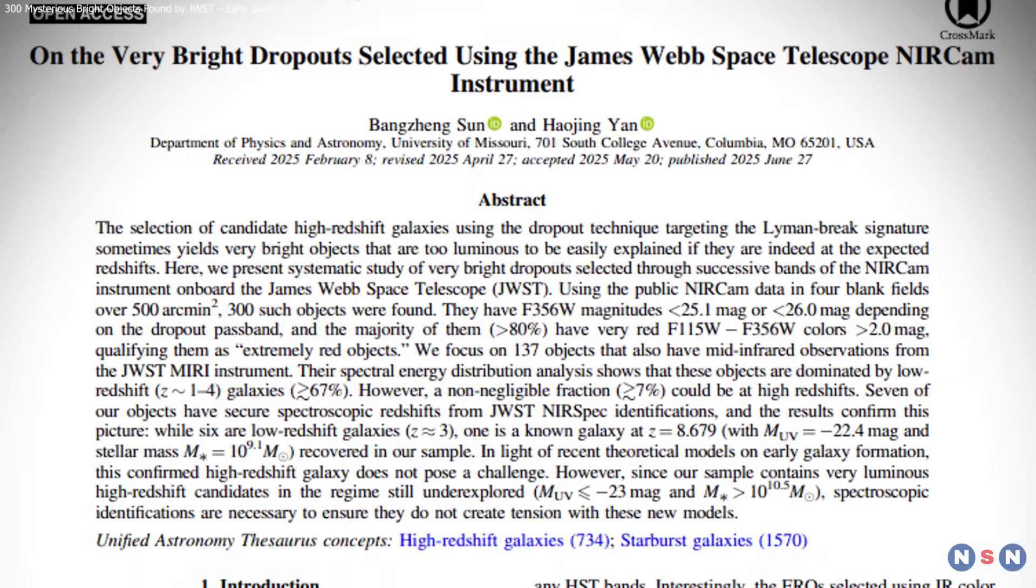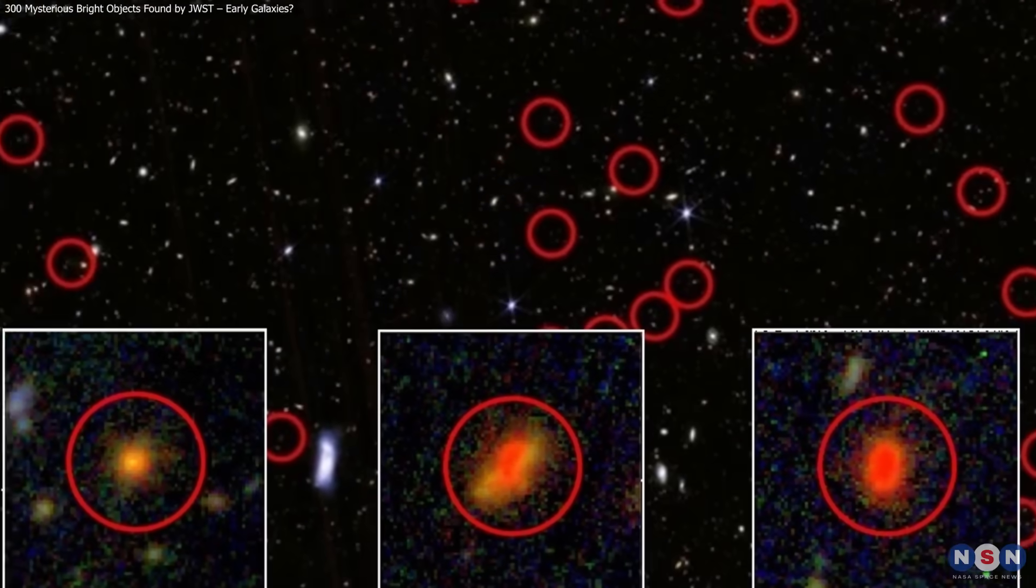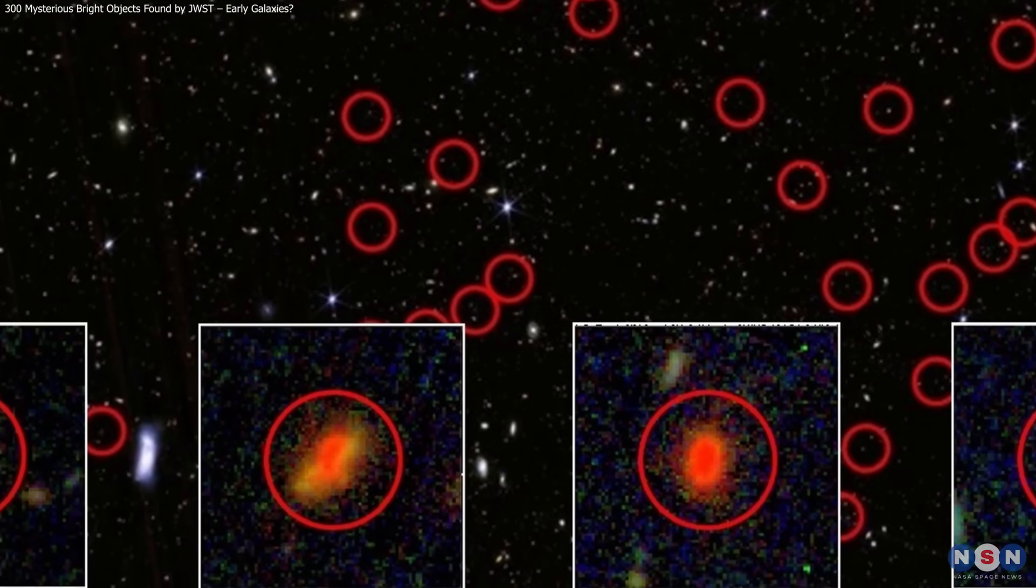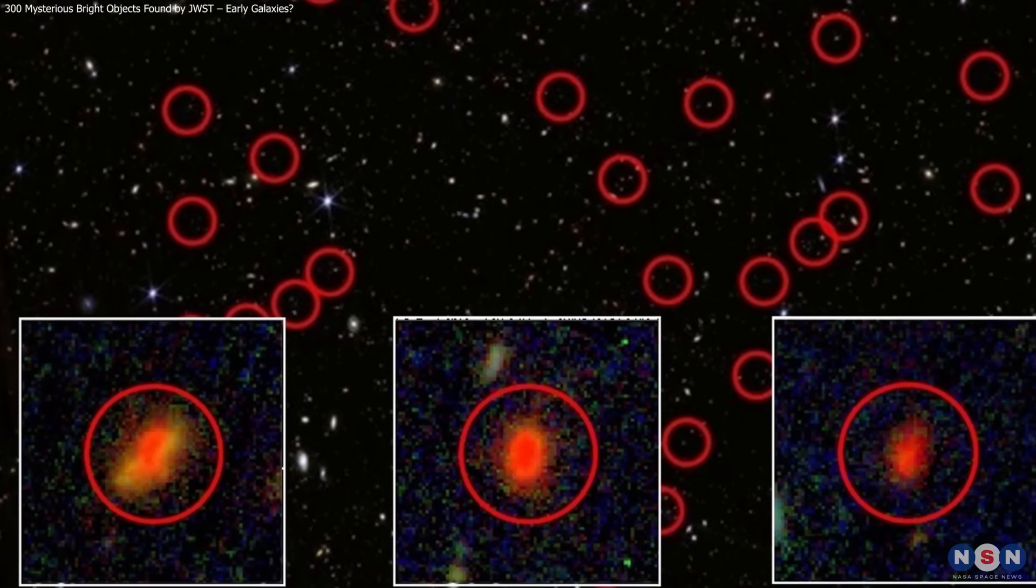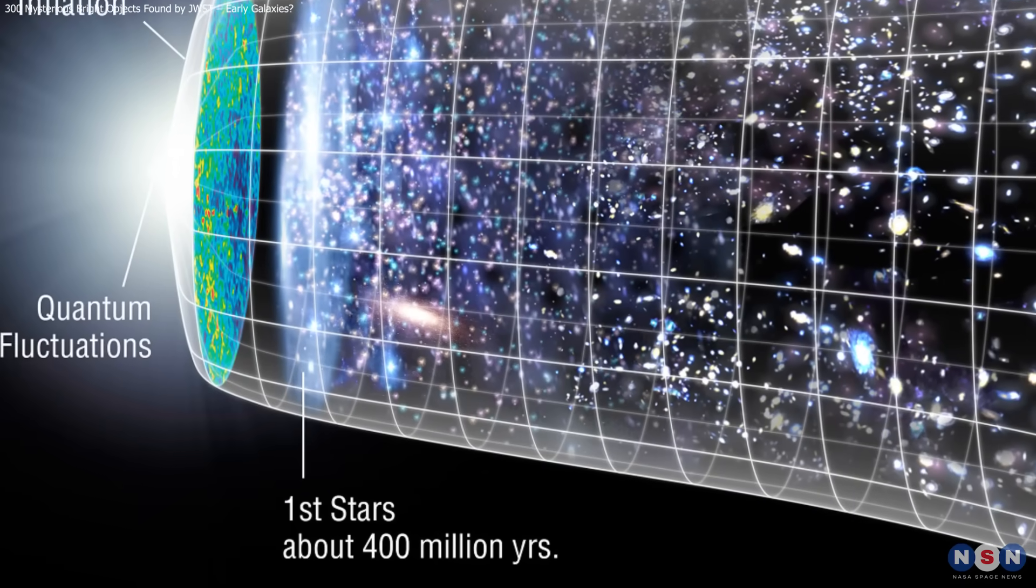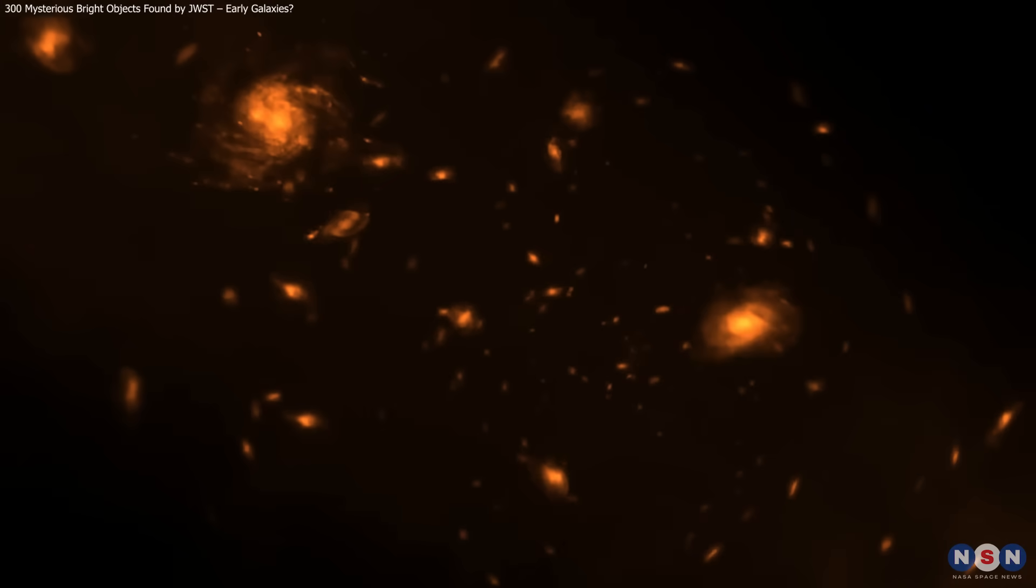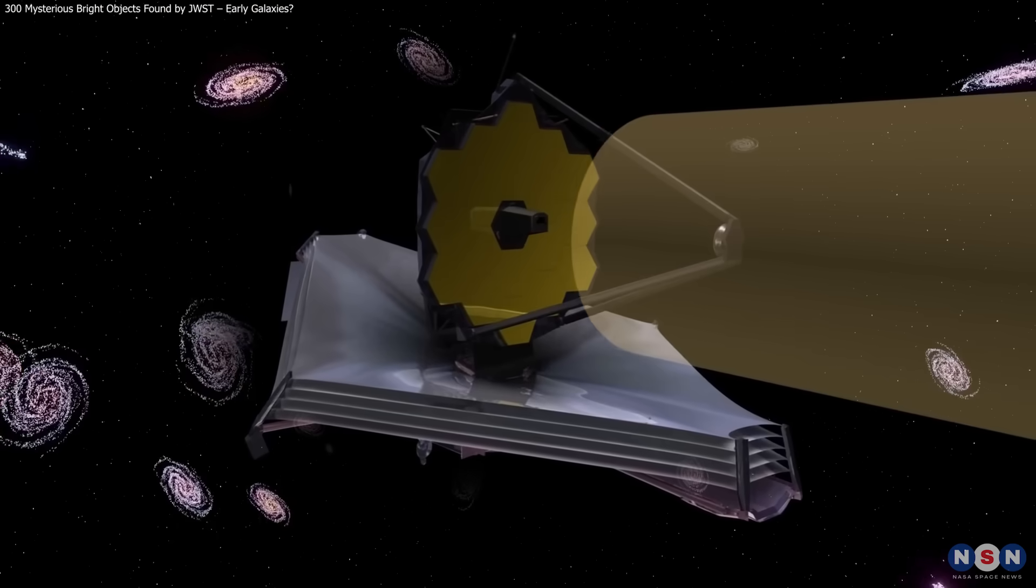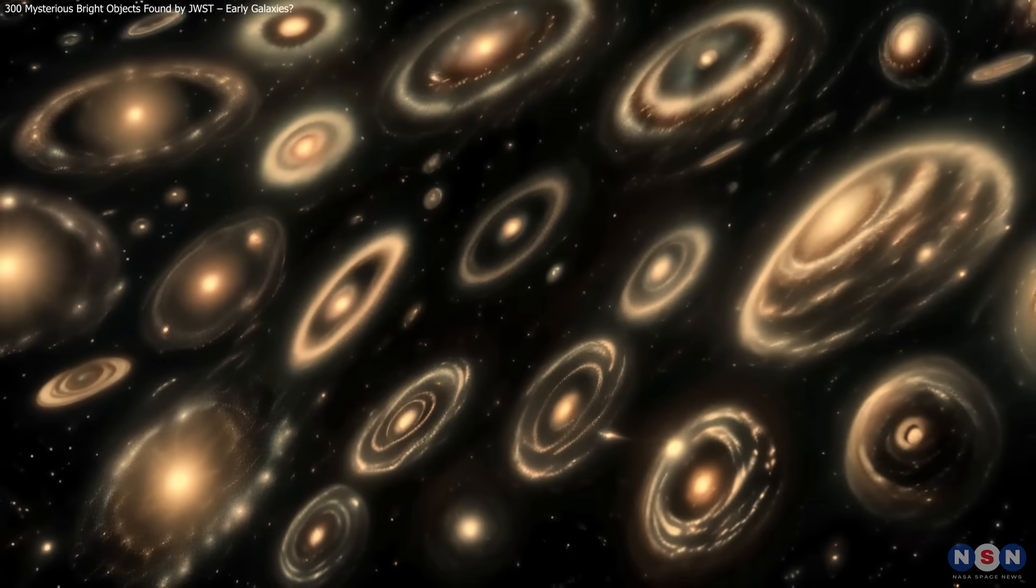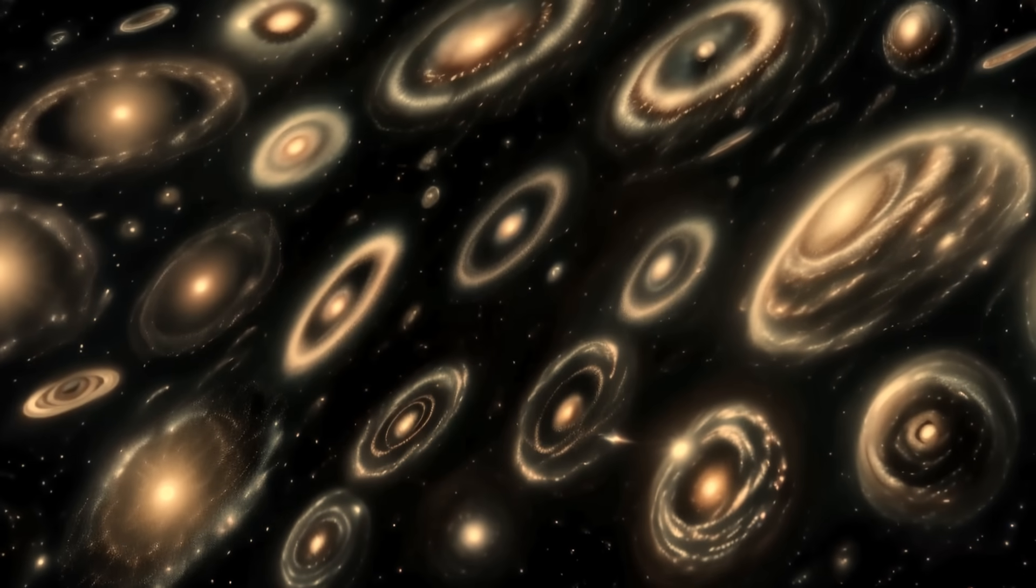JWST's discovery of 300 bright objects offers a peek at the earliest galaxies or processes that mimic them. One is confirmed from under 600 million years after the Big Bang. Confirming more will either reshape early universe models or sharpen our detection methods. Keep watching to see what these cosmic candidates reveal.